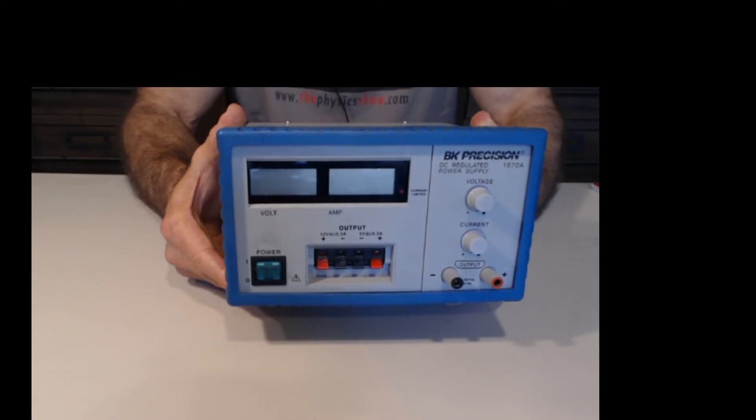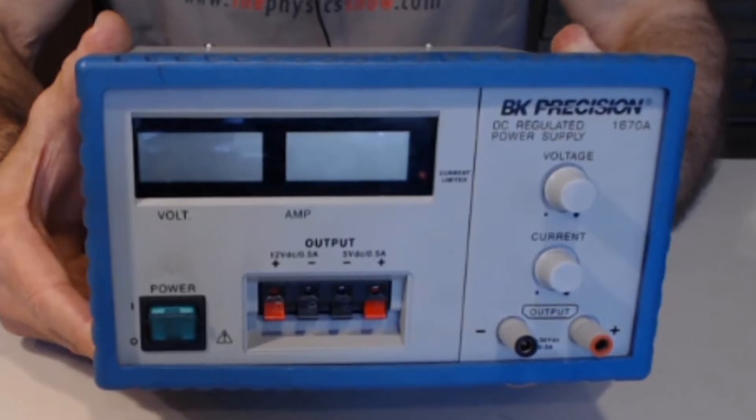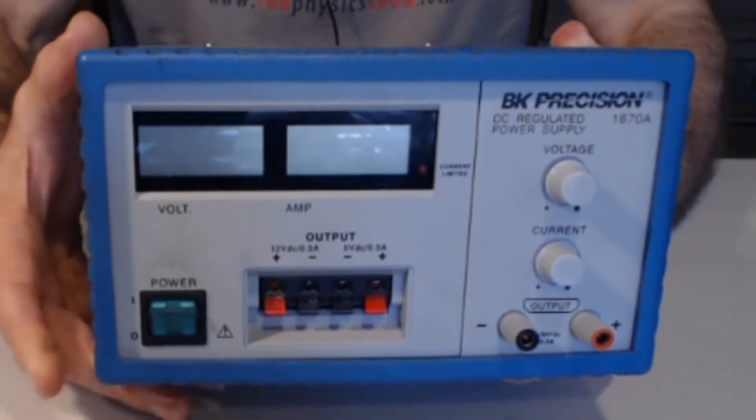When you plug something into the wall, you get a voltage that's changing in time. It's actually a sine wave. But this puts out a constant voltage like a battery does.